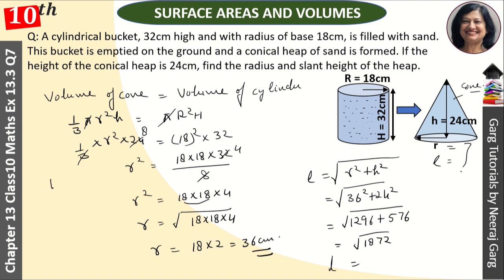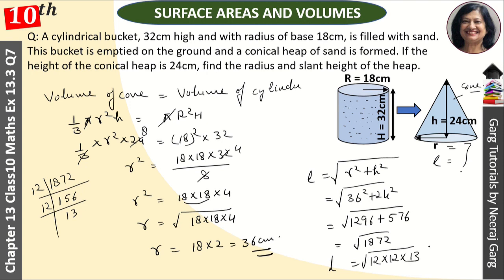Now we factorize 1872. Breaking it down: 1872 = 12 × 12 × 13. Therefore L = √(144 × 13) = 12√13 centimeters. That is our slant height.